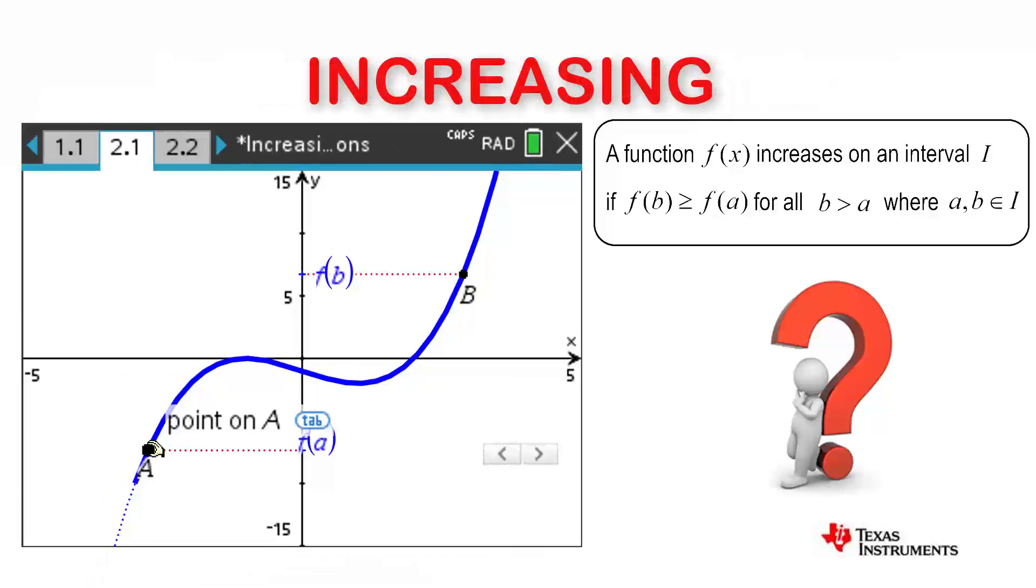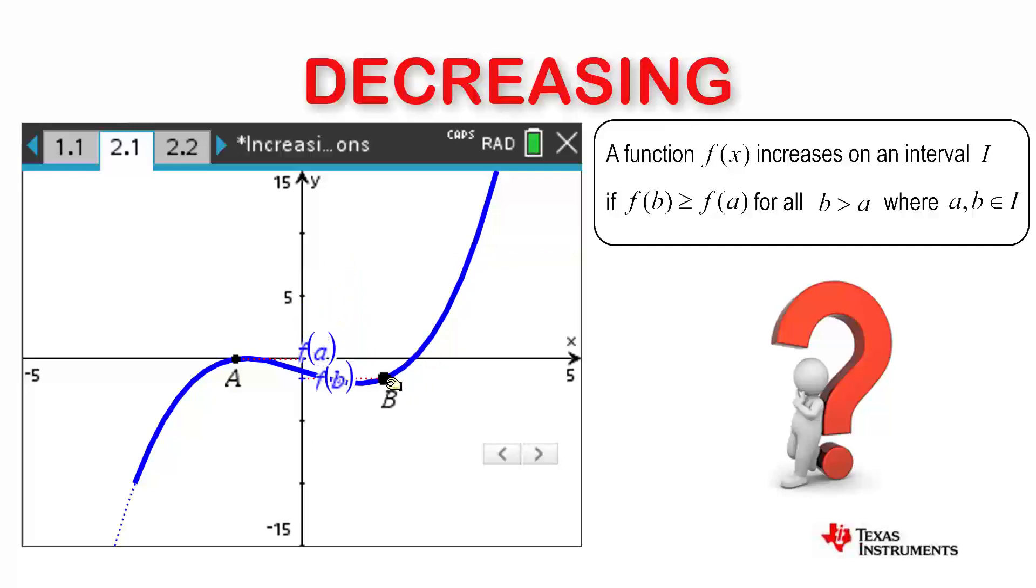In this second example, our function is not increasing for the entire interval, as we can find a region where f(a) is greater than f(b), even though we have maintained b greater than a.